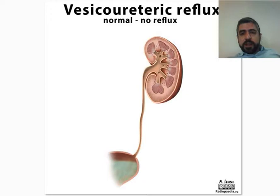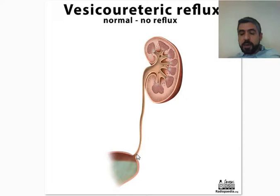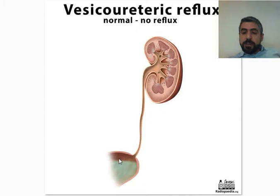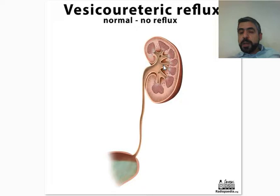Regarding the grading, the normal pattern of Vesico-Ureteric anatomy is when the ureter enters the urinary bladder in an oblique fashion through the wall of the urinary bladder and opens into its lumen. When the length of the ureter within the wall of the urinary bladder is short, this results in abnormal function of the Vesico-Ureteric Junction, allowing urine to go back into the renal collecting system.